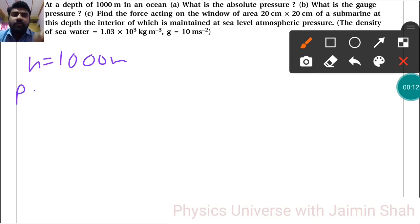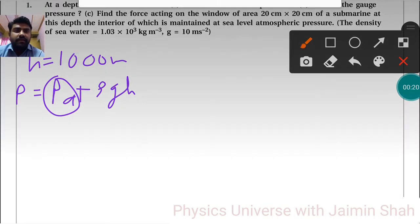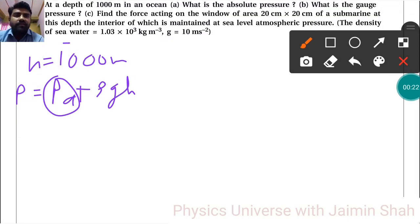Now absolute pressure formula is nothing but P is equal to Pa plus ρgh. We know Pa, density of sea water is given, g is 10, and H height is also given. So we can easily find P which is in Pascal.